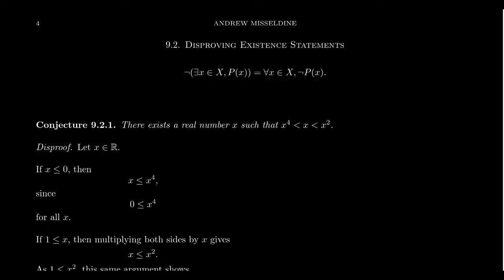To prove this — beware — this is equivalent to a conditional statement where our hypothesis is that if x belongs to the set X, this then implies that not P of x holds. And you can prove this statement using direct proof, contrapositives, contradiction, or any of the other methods we've talked about in order to prove a conditional statement.